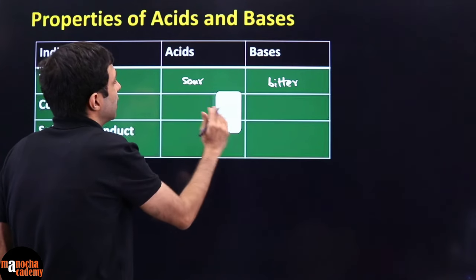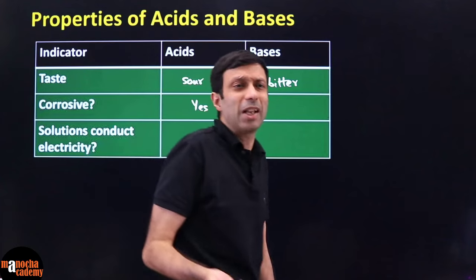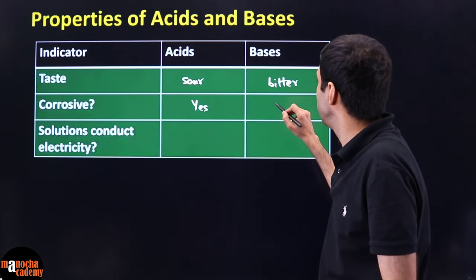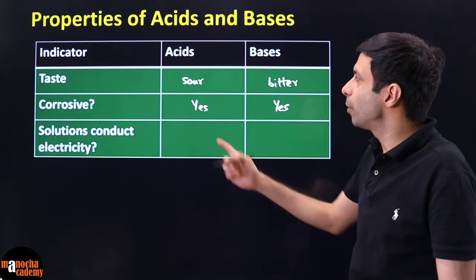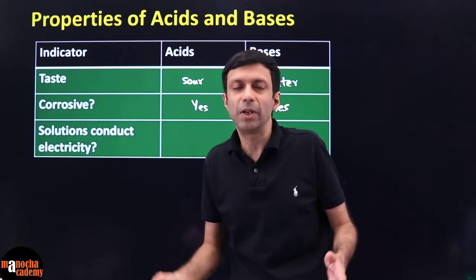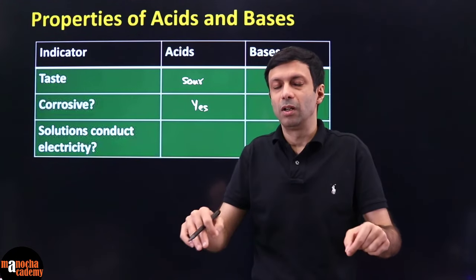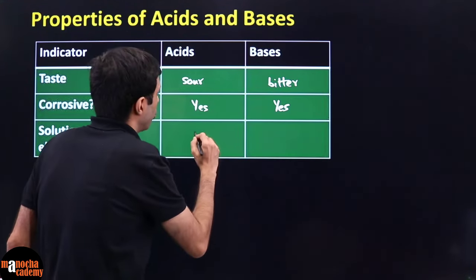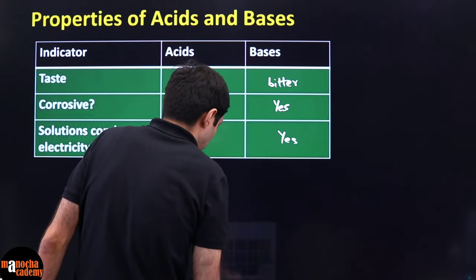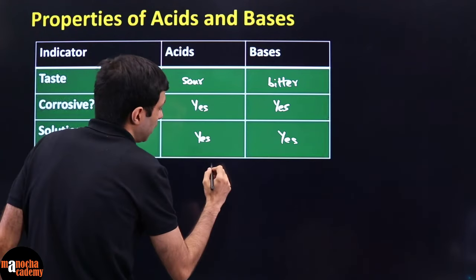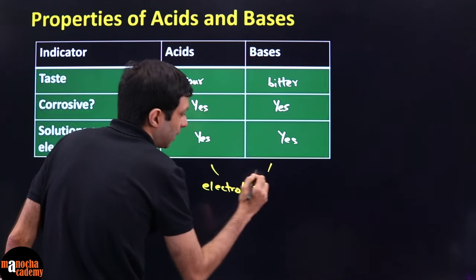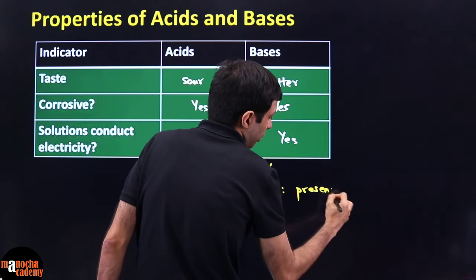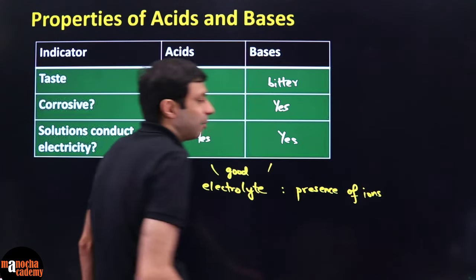What about bases — are they corrosive? Yes, bases like sodium hydroxide and potassium hydroxide can also be highly corrosive. Do acid and base solutions conduct electricity? You can do a simple experiment: dissolve an acid or base in water, use a battery, and see if the bulb glows. The answer is yes — they are good conductors of electricity in solution form, and are therefore known as electrolytes. They conduct electricity due to the presence of ions in the solution.